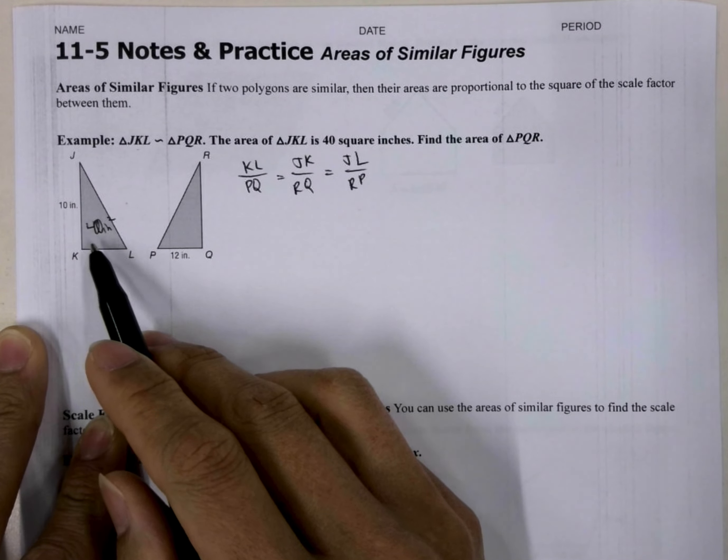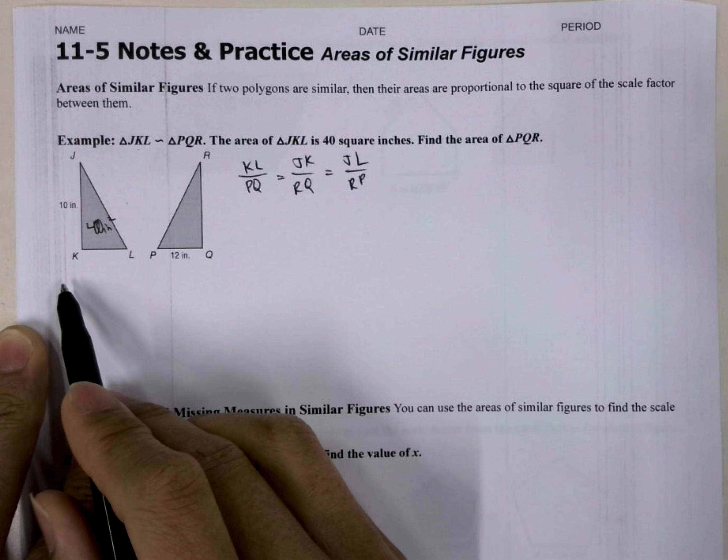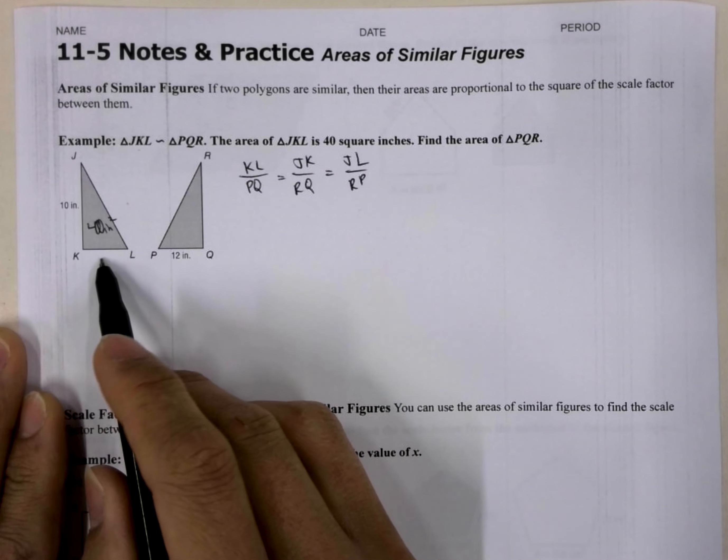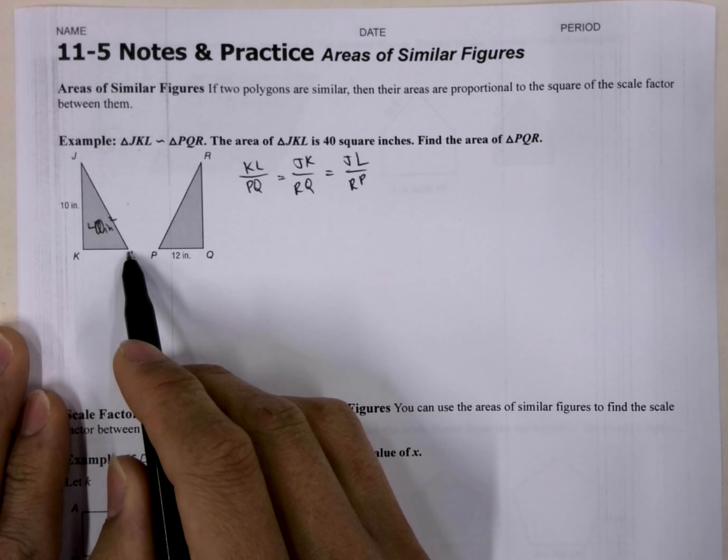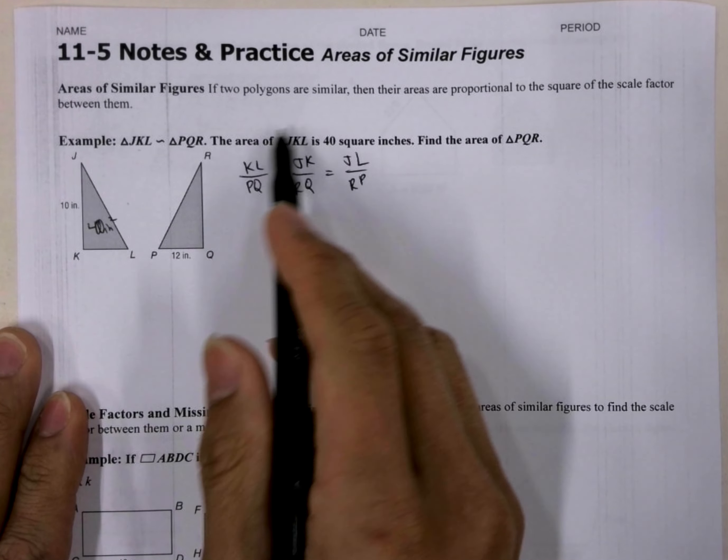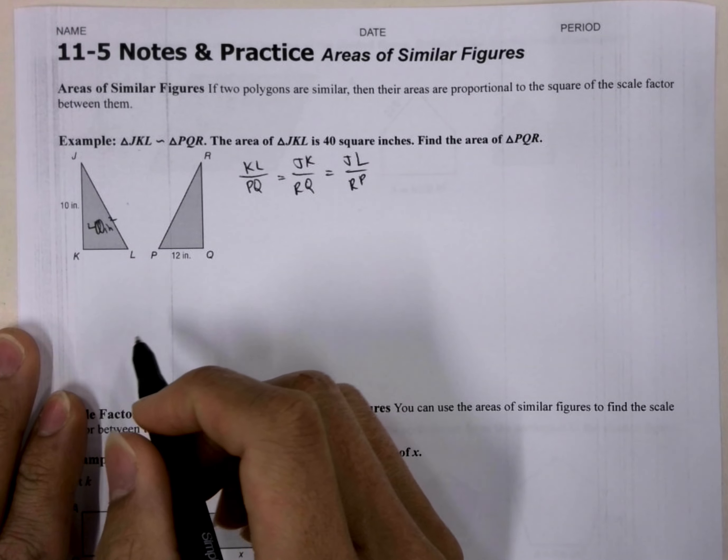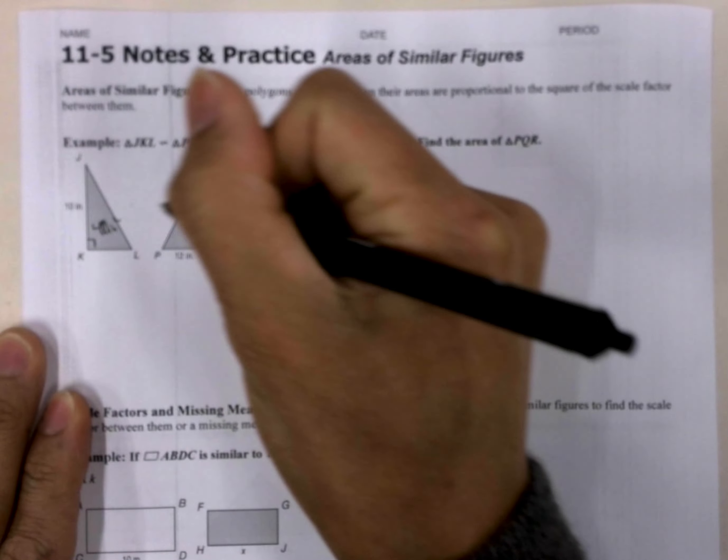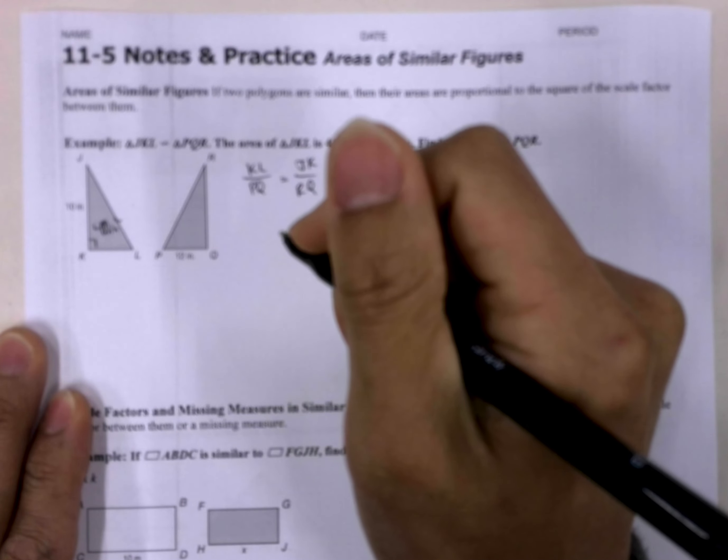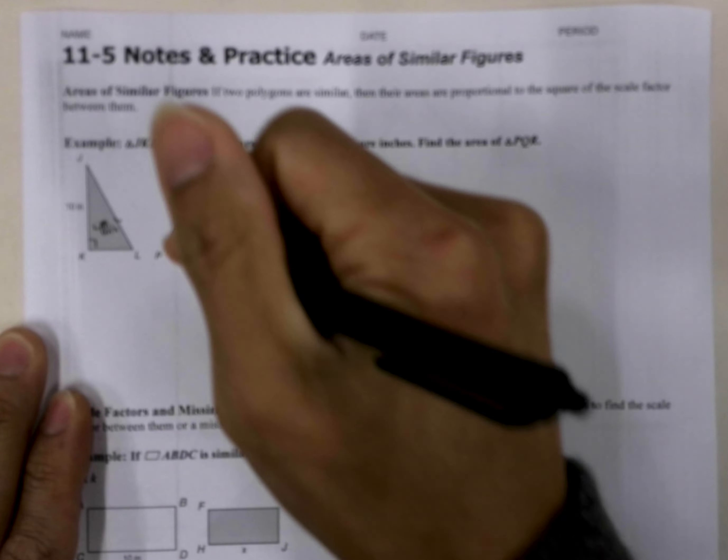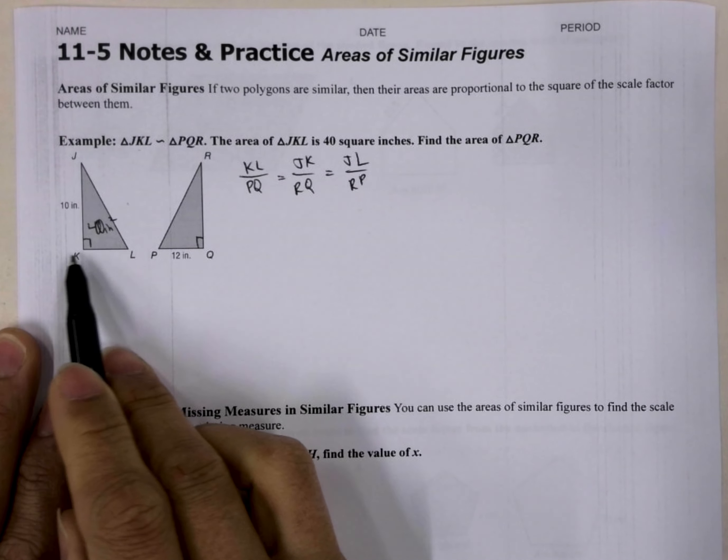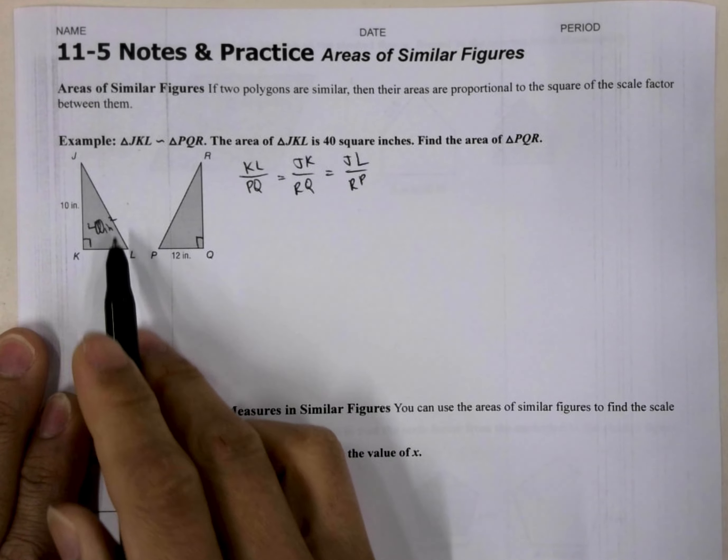So we have the area of this triangle. The area is 1 half base times height. So first thing we would need to do is find KL, and we can find KL because they give us the area of the triangle. Additional information we would want here would be that these are a right angle there, and this is also a right angle, which means that 10 is the height and KL is the base.